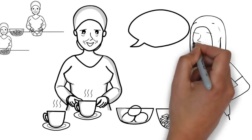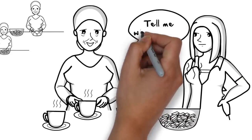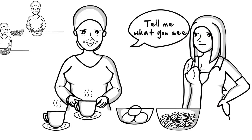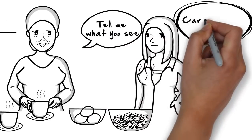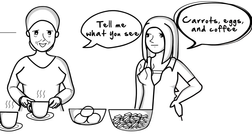Turning to her granddaughter, she asked, tell me what you see. Carrots, eggs, and coffee, she replied.